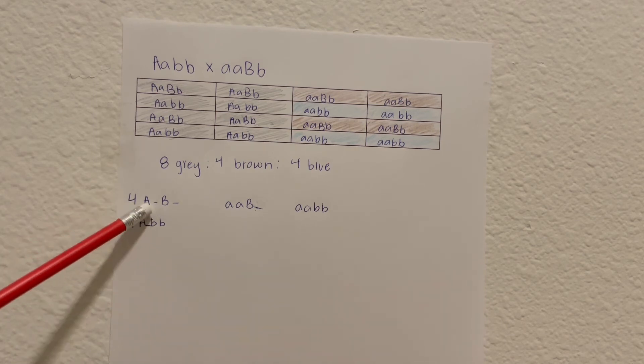So this time we have four with the capital A and the capital B, and four with the capital A with two lowercase b's, and those add up to make gray.